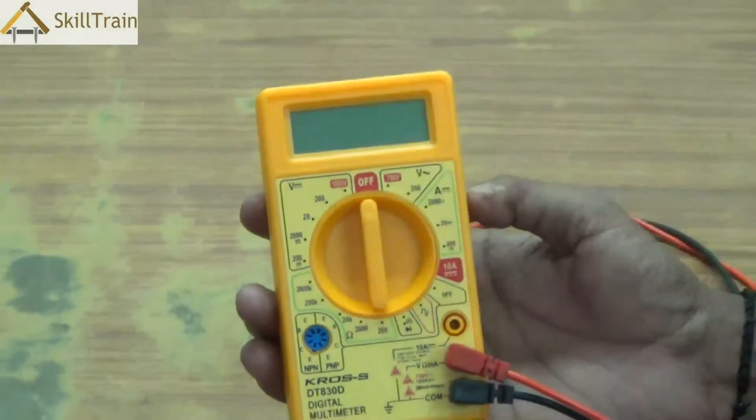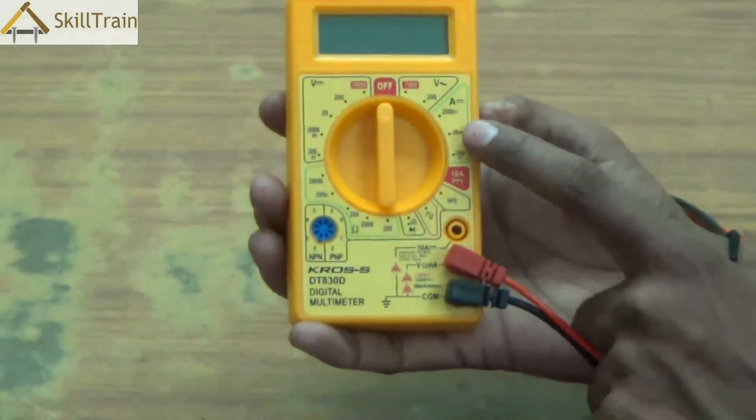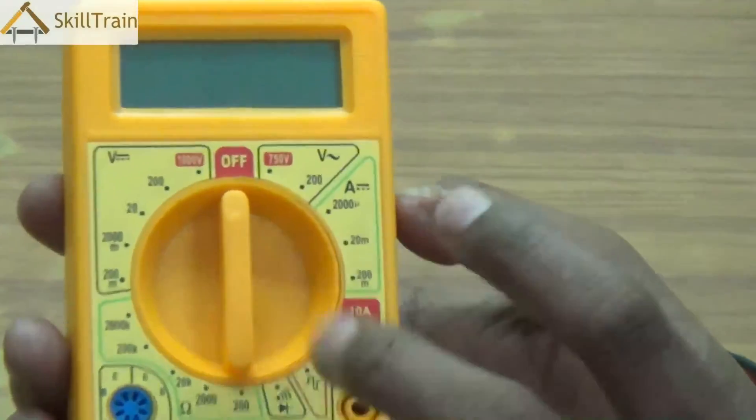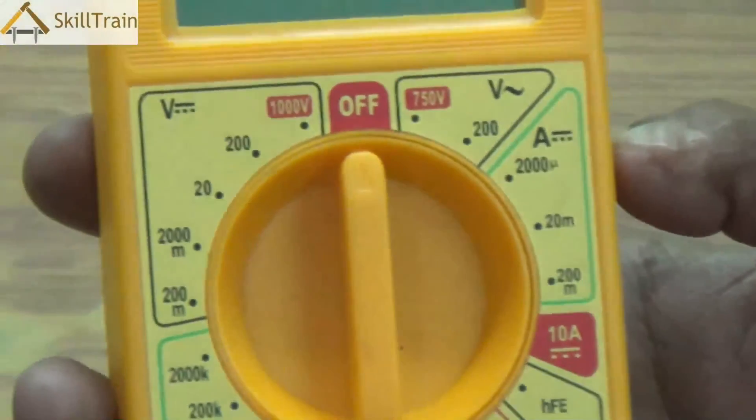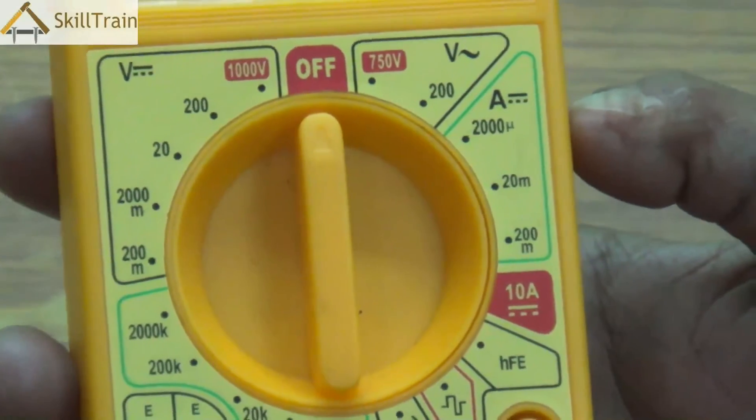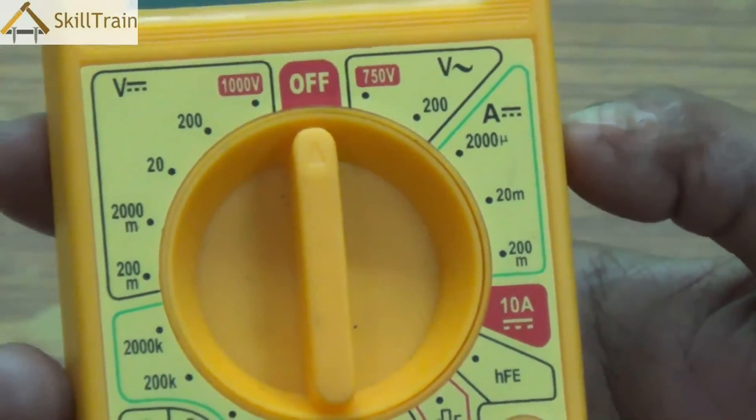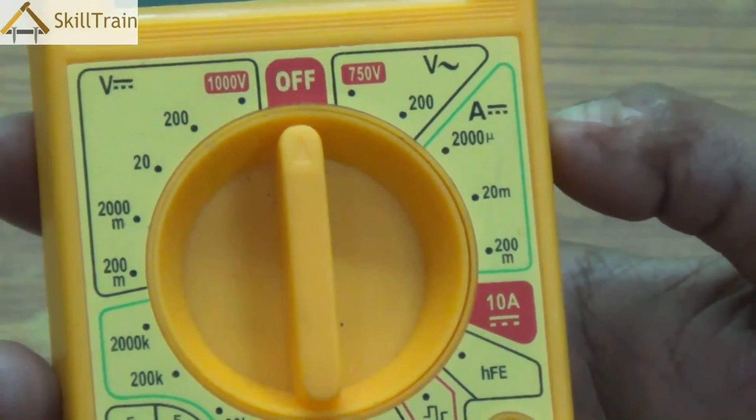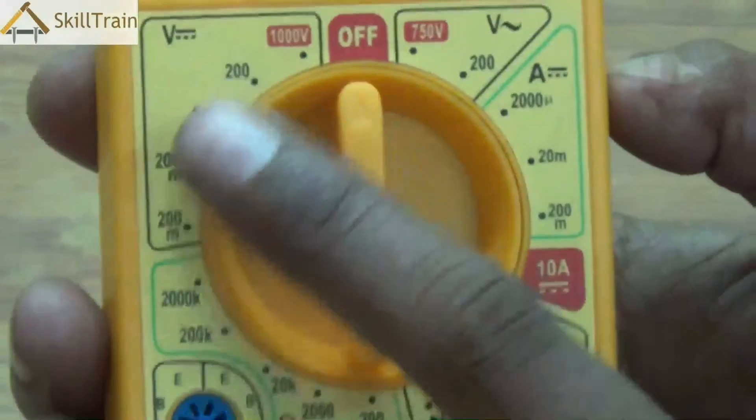Now whenever the multimeter is not required, the knob should be placed in the OFF position. Going further down you'll see a few more micro readings on the right hand side for smaller readings that can be measured. However, let us focus on only those readings that are very important that we commonly use with a multimeter.